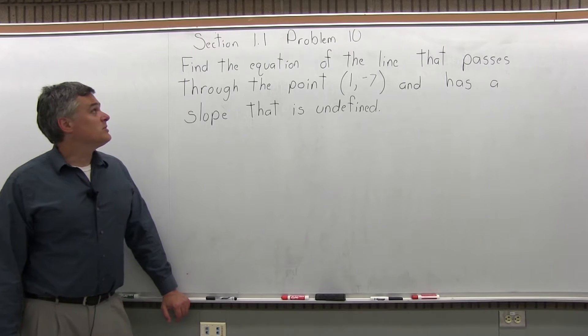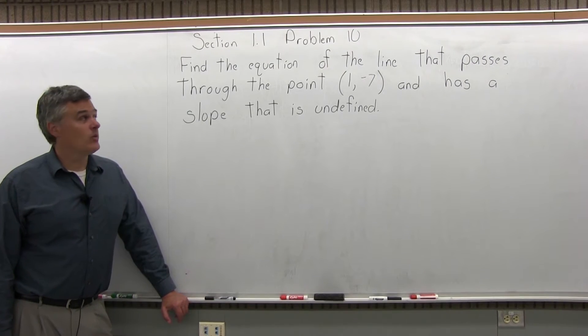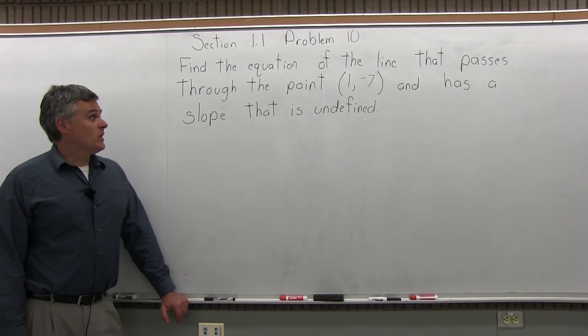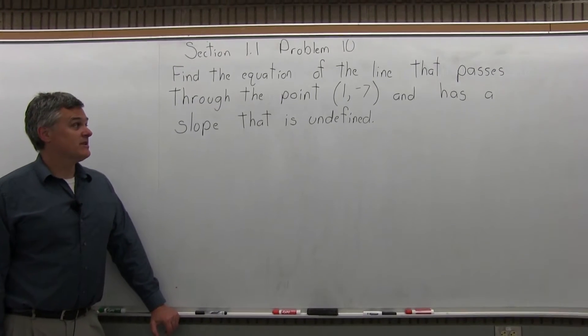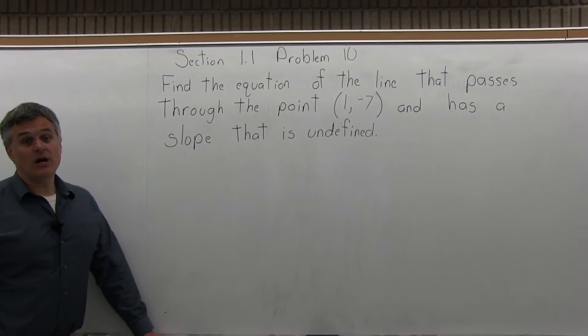This is Problem 10 from the homework from Section 1.1. It says, find the equation of the line that passes through the point (1, -7) and has a slope that is undefined.